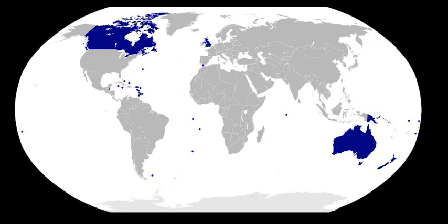Elizabeth II is head of the Commonwealth. In 1952, Britain's Proclamation of Elizabeth II's Accession used the term "realms" to describe the seven sovereign states of which she was queen—the United Kingdom, Canada, Australia, New Zealand, South Africa, Pakistan, and Ceylon. Since then, new realms have been created through independence of former colonies and dependencies, and some realms have become republics.